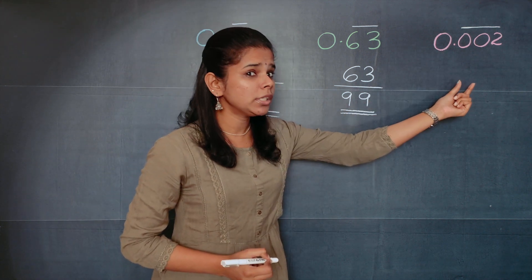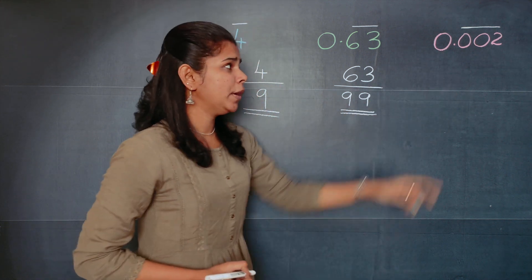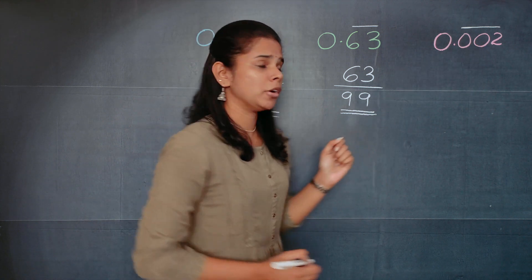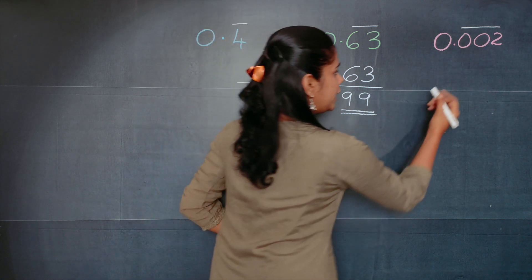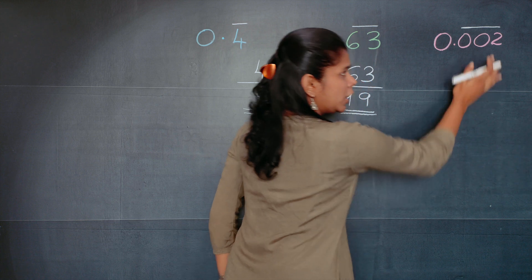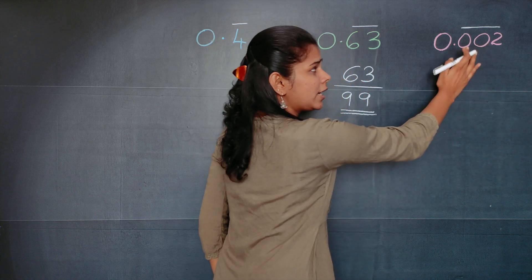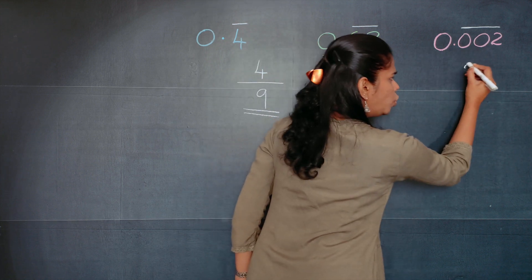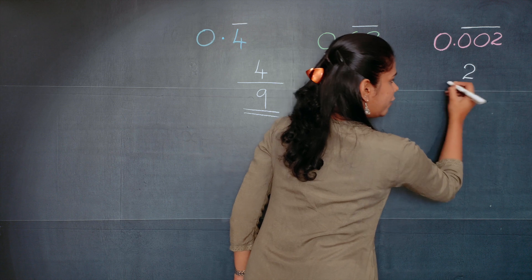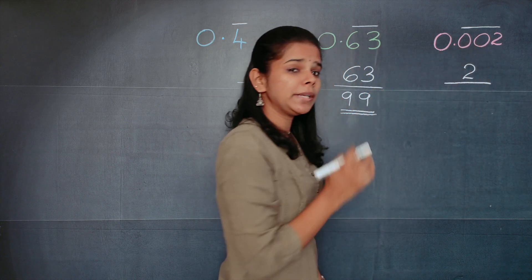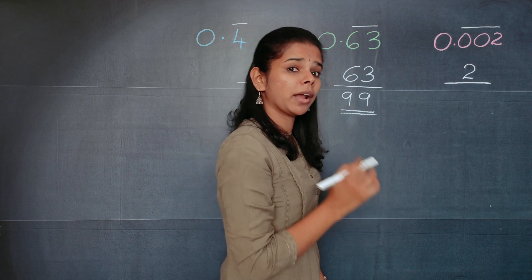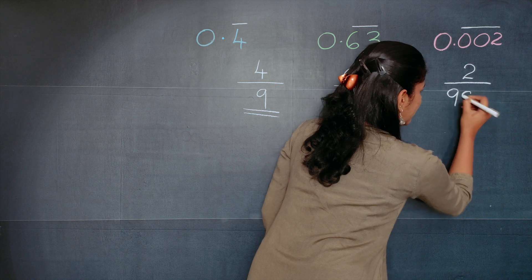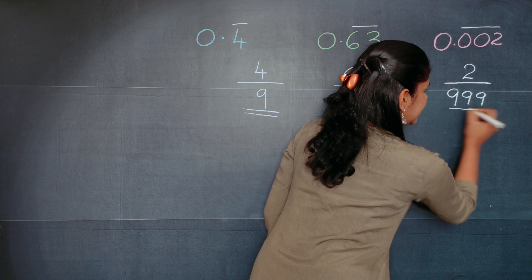Moving on to the last question of this type, you can see there are three numbers under the bar. So you write that number as such. Since the number is 002, you write it as 2, divided by — how many numbers are there under the bar? Three. So it is 2 by 999.